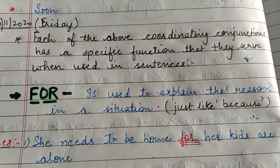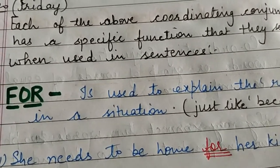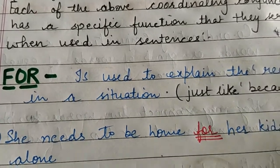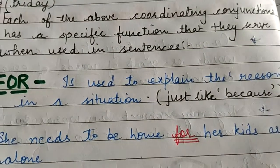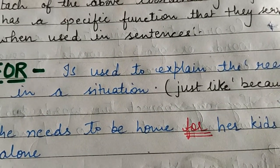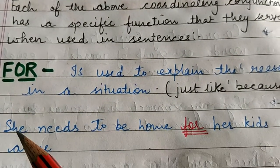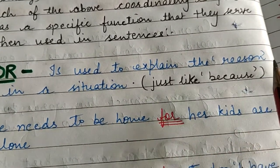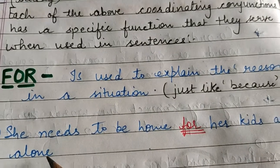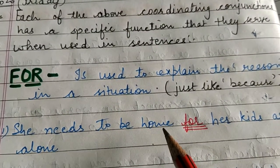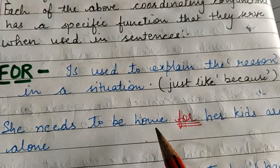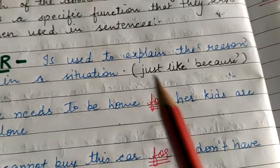First is 'for'. For is a coordinating conjunction whose function is the same as 'because' or 'since'. Like 'since' and 'because' are used to explain the reason for a situation, 'for' is used in the same way — to explain the reason or purpose in a situation. For example: 'She needs to be home, for her kids are alone.'